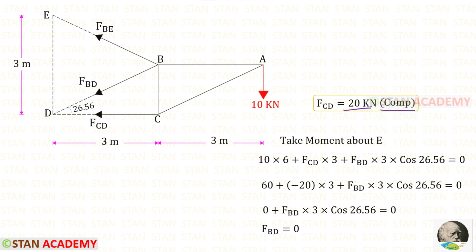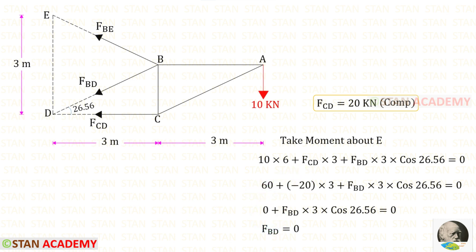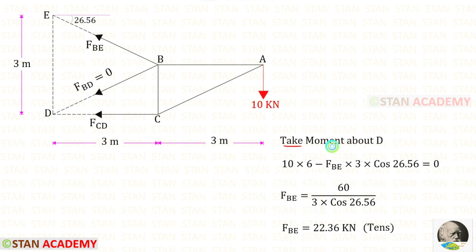We know FCD = 20 and it is compressive, so we apply it as negative: minus 20 times 3 equals minus 60. Working through the equation — 60 minus 60 equals 0 — so FBD = 0.